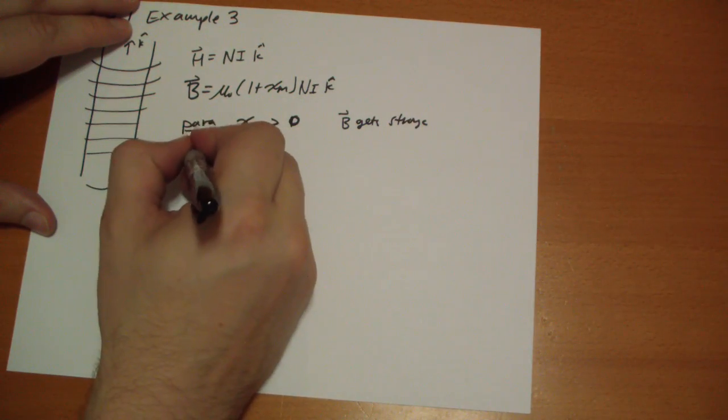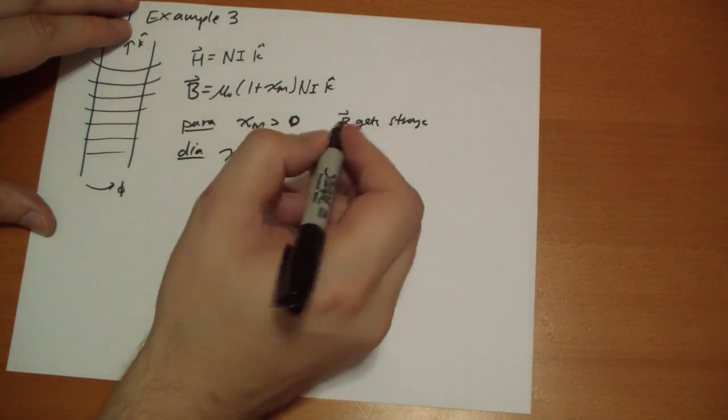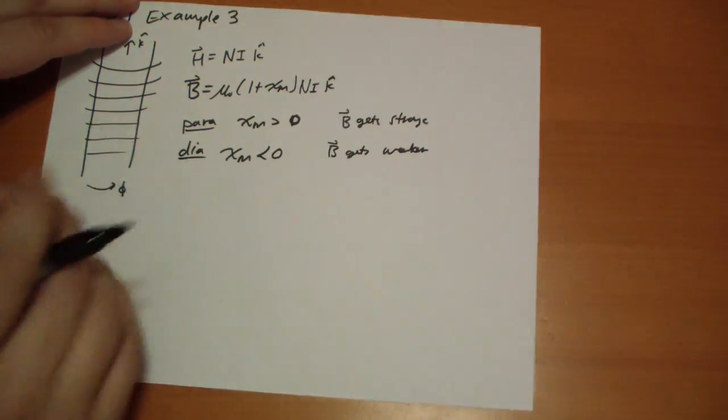If it's diamagnetic, then chi m is less than zero and B gets weaker.